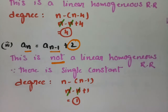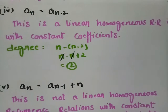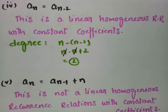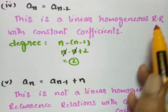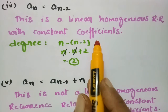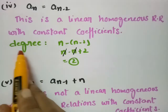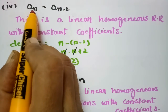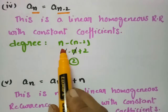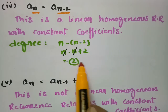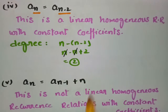The next example is aₙ = aₙ₋₂. This is a linear homogeneous recurrence relation with constant coefficients. The degree is the difference between the greatest subscript n and the least subscript n−2, so the degree is equal to 2.